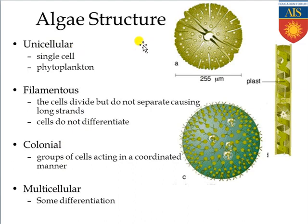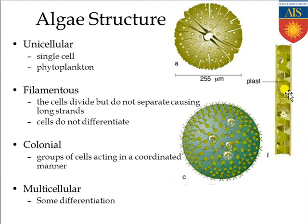Unicellular algae are those containing only a single cell, and phytoplanktons are general examples of unicellular algae. Filamentous algae are another type where the algae have a filament-like or fibre-like structure. The cells divide but do not separate, causing long strands, and the cells of filamentous algae are not differentiating.